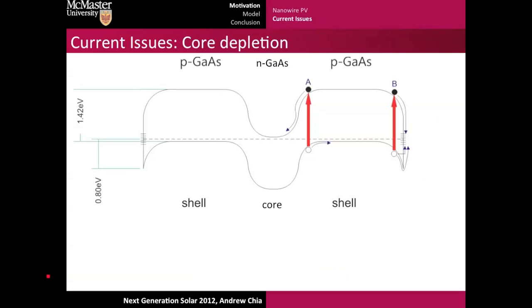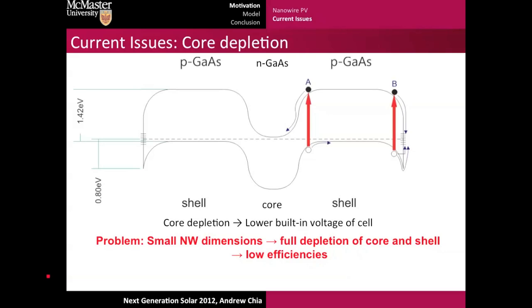Another issue is core depletion. If we were to go into the opposite extreme, whereby the core is very thin compared to the shell, the core could be fully depleted and that also lowers the built-in potential. In general, the small nanowire dimensions, although they buy you some really nice properties, also lead to some problems, namely problems with depletion of both the core and the shell. That leads to low efficiencies.